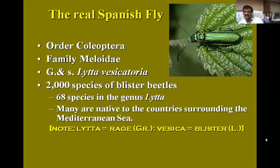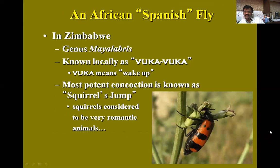The real Spanish fly — the order of this animal is Coleoptera and the family is Meloidae. There are 2000 species of blister beetles, with 68 species in the genus Lytta. Many are native to countries surrounding the Mediterranean Sea.